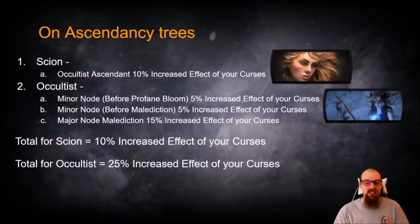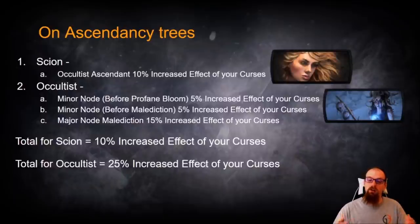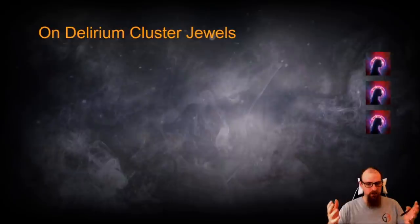And 15% is nothing to sneeze at when we're talking about some relatively low numbers overall for what's available on the base passive tree and on Ascendancy tree. And now we come to the demon at hand, Delirium Cluster Jewels.